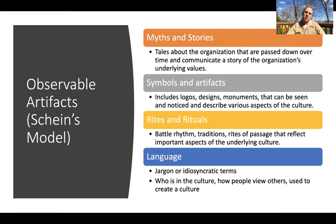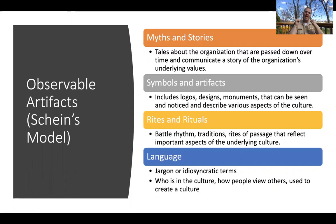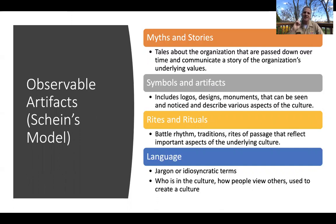These come in various forms. What Schein suggests is they come in the form of myths and stories, symbols and artifacts, rites and rituals, and language. These are the things that you can observe. If you're an outside observer, you can come into an organization, walk into your unit your first day as a new division officer or a new platoon commander, and start to hear the myths and stories, see the symbols and artifacts, be aware of the rites and rituals, and begin to speak the language.